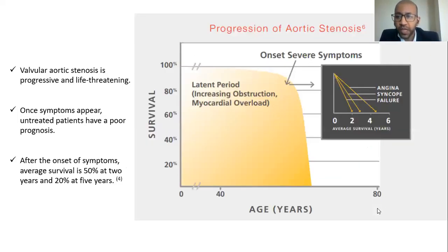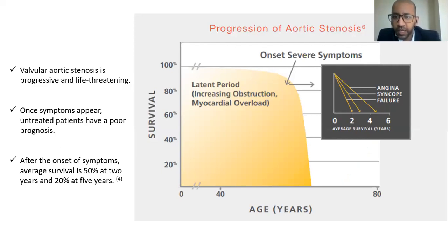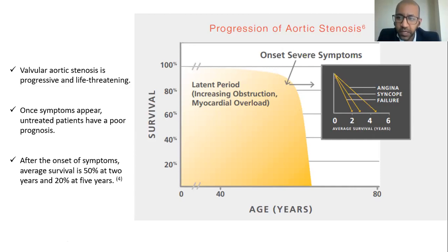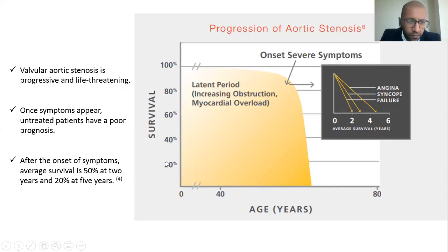Aortic stenosis usually runs an asymptomatic latent period of one to two decades during which LV outflow obstruction and pressure load gradually increase. Initial symptoms are exertional dyspnoea, even in patients with normal LV function. Eventually the three cardinal signs emerge — chest pain, syncope, and heart failure — which respectively carry poor prognosis, with heart failure having the worst. Symptomatic patients have an average survival of 50% at two years and only 20% at five years if left untreated.